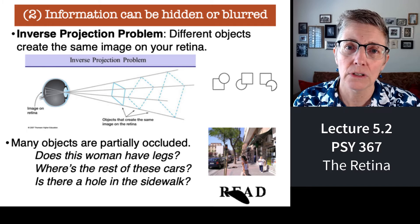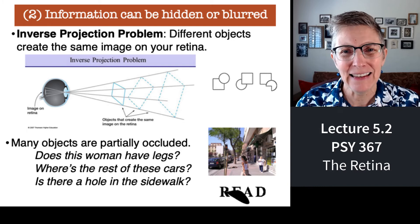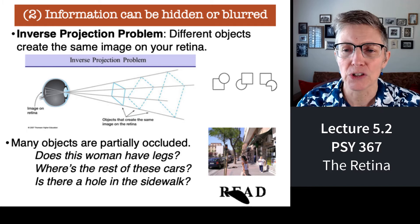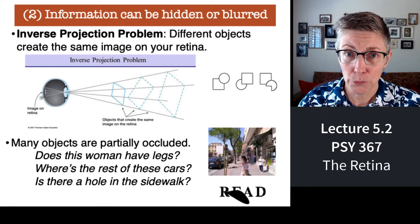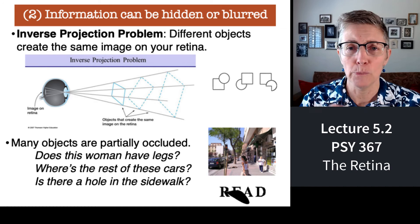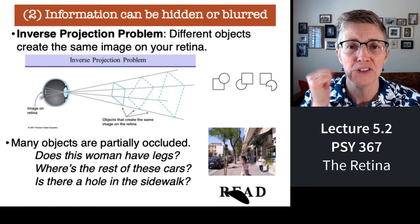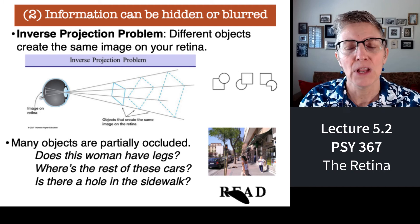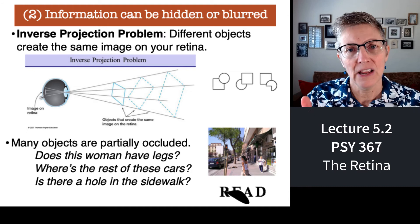Why else is sensation ambiguous? Because a lot of information can be hidden or blurred. If you're looking at the world with one eye, or at things far away with both eyes, you have something called the inverse projection problem — essentially, different things in the three-dimensional world project the same two-dimensional image on the back of your eyeball. The retina lays out flat; it's two-dimensional. But the world is three-dimensional, so a lot of information is lost when you reduce 3D information down to 2D.